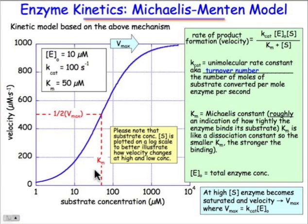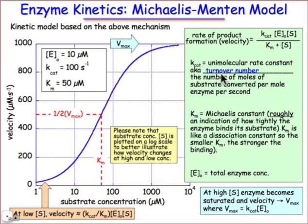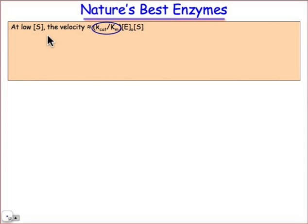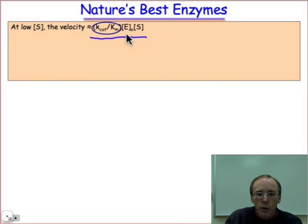At the low limit of substrate concentration, the Km term dominates the denominator, and we're left with the expression highlighted in the box: velocity equals kcat over Km times enzyme concentration times substrate concentration. That's the low-limit velocity for the enzyme-catalyzed process. Kcat over Km reflects the enzyme efficiency — it's effectively a second-order rate coefficient, with units corresponding to a second-order rate expression multiplying enzyme concentration and substrate concentration.